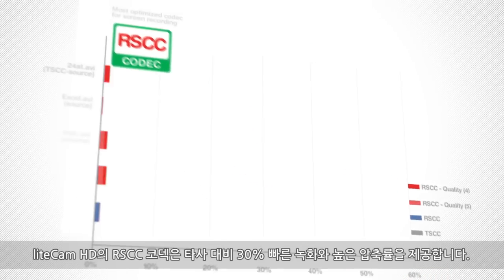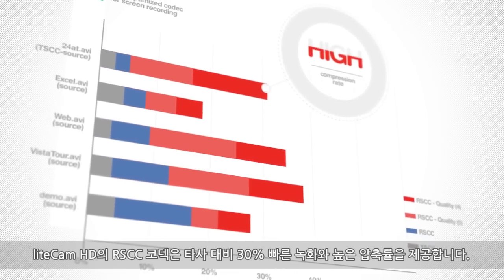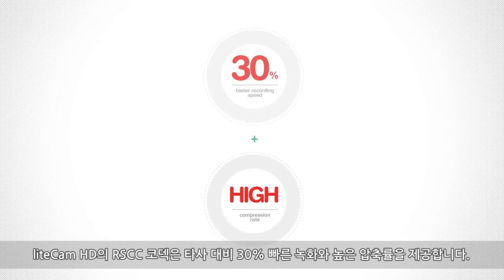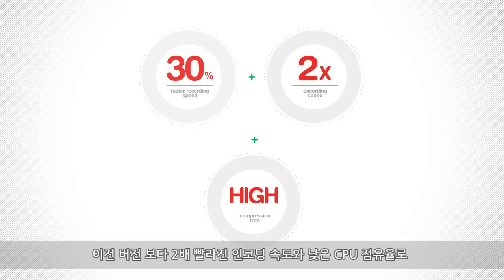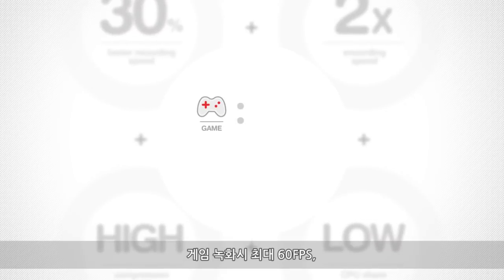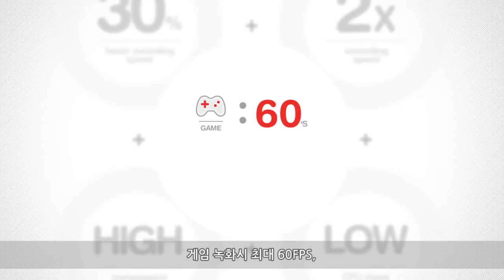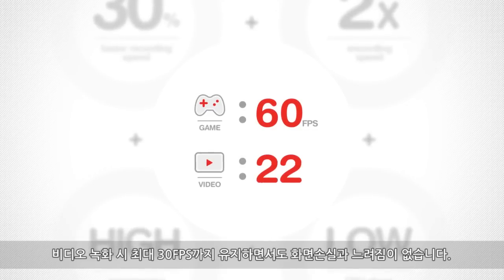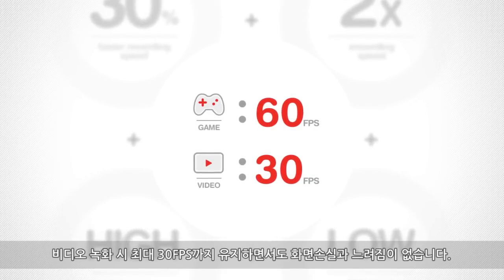LiteCam HD's RSCC codec offers a higher compression rate and 30% faster speed compared to other companies' codecs. RSCC boosts encoding speed up to twice as fast as before, and through low CPU usage, you can maintain a maximum of 60 frames per second during game recording and 30 frames per second during video recording, without compromising picture quality or speed.